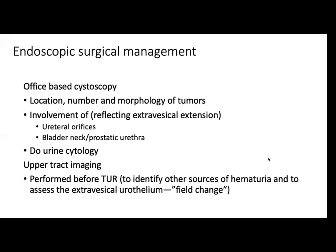For endoscopic management, you can do office-based cystoscopy to know the location, number, and morphology of the tumor. Check if ureteral orifices are involved, the bladder neck, and prostatic urethra. Always do urine cytology. Upper tract imaging is also performed to identify other sources of hematuria and to assess the extravesical urothelium.